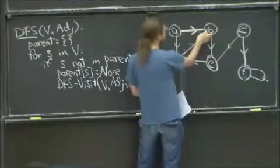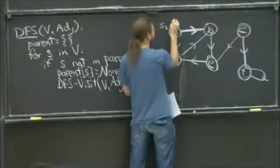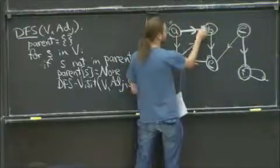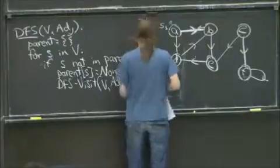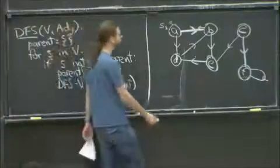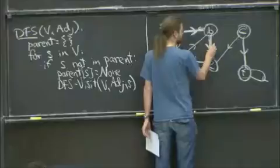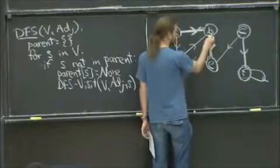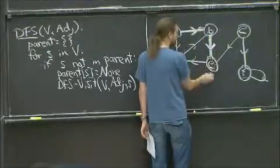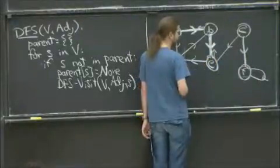We look at B. B has not been visited yet, has no parent pointer. This one has a parent pointer of null. B we're going to give a parent pointer of A. That's here. Then we recursively visit everything from B. So we look at all the outgoing edges from B. There's only one, so we visit this edge. Great. From B to E. E has not been visited, so we set its parent pointer to B. And now we recursively visit E.